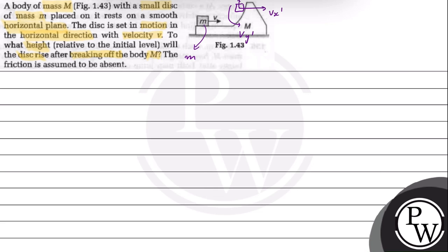In the x-direction, the disc small m will have similar velocity to the body capital M.